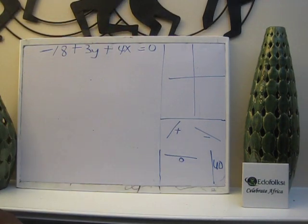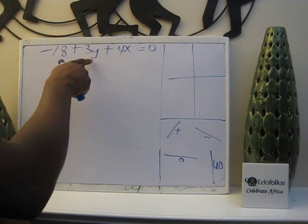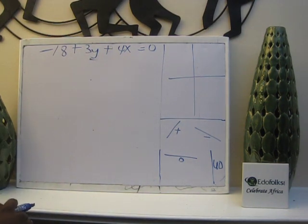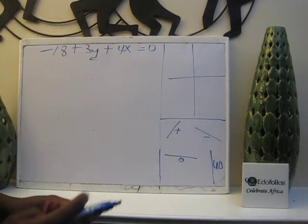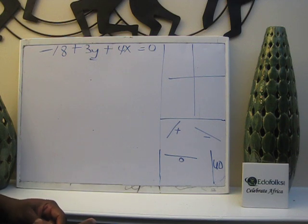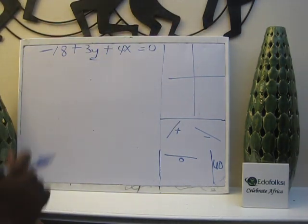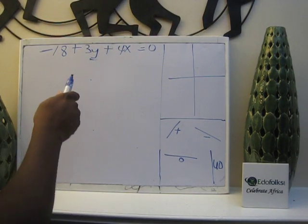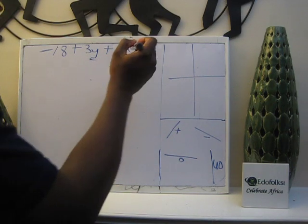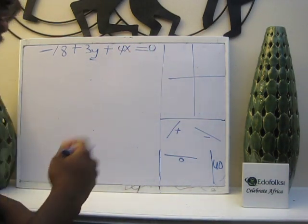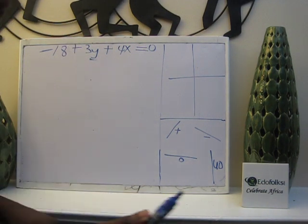When you have a problem like this, always make y the subject of formula. Because whatever is beside x is going to be the slope and whatever the whole number is is going to be the intercept. So we move everything to the other side. And don't forget, whenever you move a number across the equal to sign or greater than sign, it must change its sign.